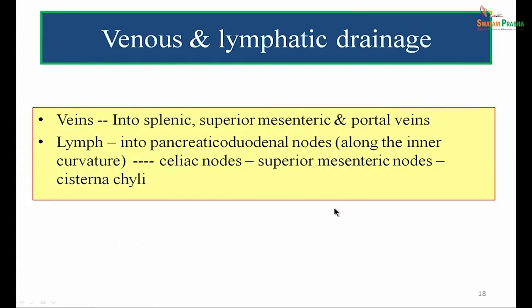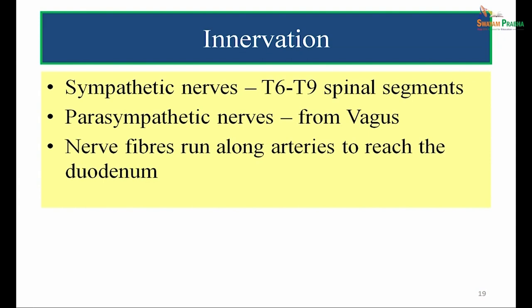Venous drainage: the veins drain into the splenic veins and superior mesenteric veins and finally into the portal vein. The lymphatics drain into the pancreaticoduodenal nodes along the inner curvature of the duodenum, then into celiac nodes, then superior mesenteric nodes, and finally into the cisterna chyli from where the thoracic duct arises. Innervation: sympathetic nerves arise from T6 to T9 spinal segments; parasympathetic nerves are derived from the vagus. These nerve fibres run along the arteries to reach the duodenum.